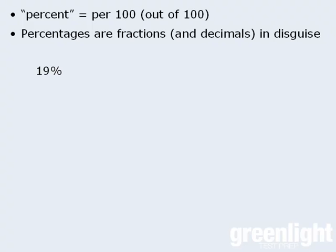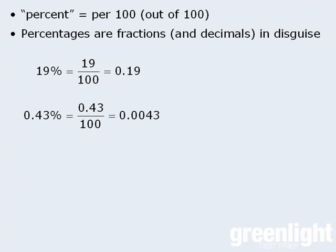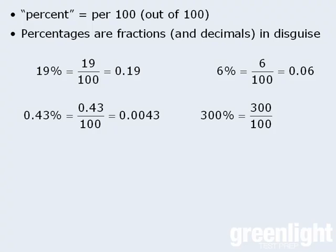For example, 19% literally means 19 one-hundredths, and since we already know how to convert fractions to decimals, 19 one-hundredths is equal to 0.19. Similarly, 0.43% is the same as 0.43 over 100, which equals 0.0043. 6% equals 6 one-hundredths, or 0.06. And 300% equals 300 over 100, which equals 3.